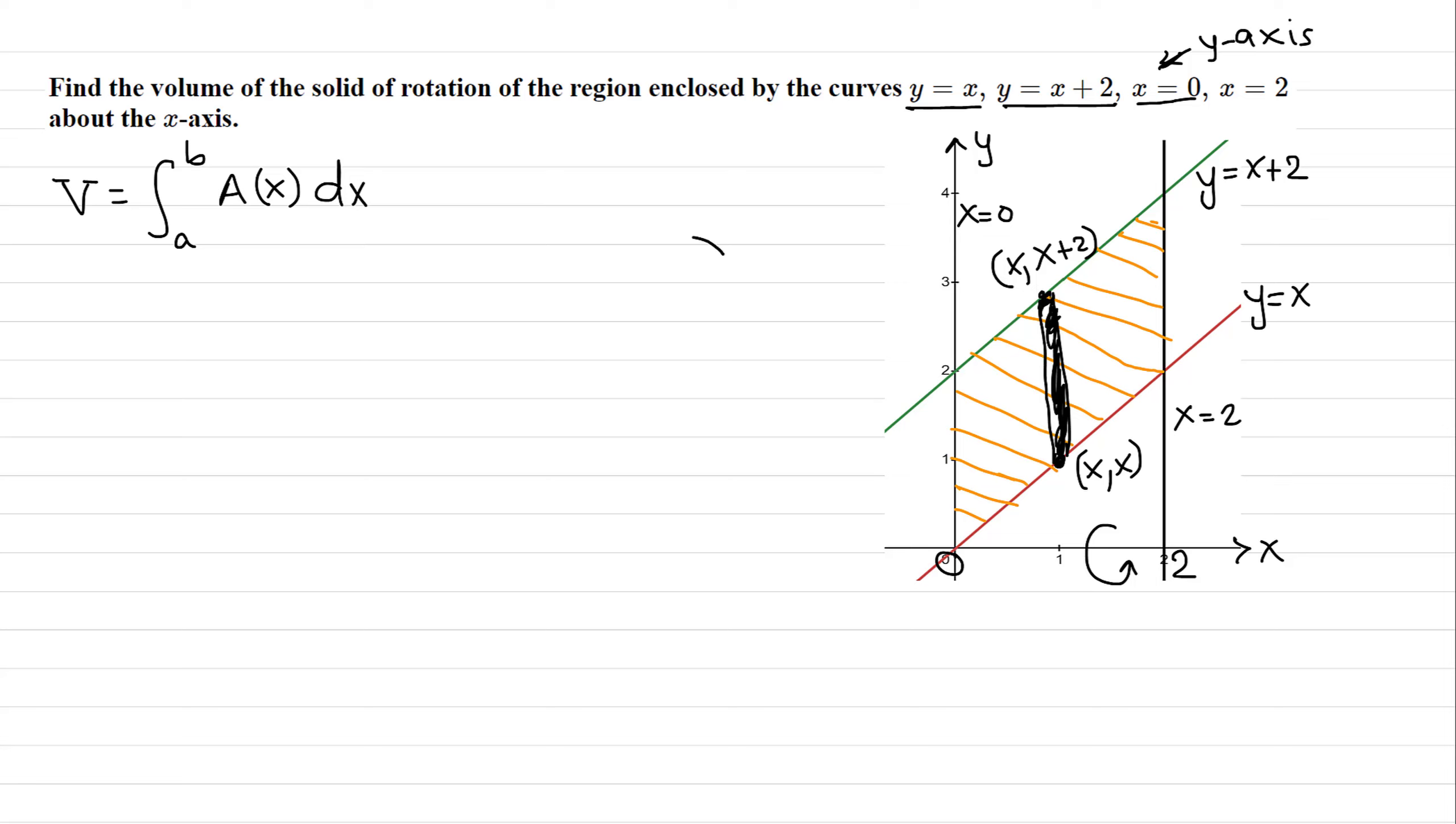If we rotate this slice about the x-axis, we're going to get a washer. This slice becomes a washer with a hollow inside. We denote the outer radius by uppercase R and the inner radius by lowercase r. So x plus 2 from all the way to the x-axis is R, and y equals x gives us the little r.